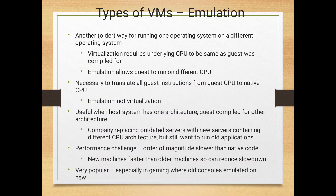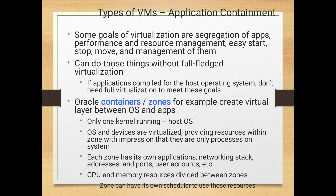Emulation is another way of running one operating system on a different operating system. Emulation allows a guest to run on a different CPU by translating all guest instructions from the guest CPU to the native CPU. Emulation is not virtualization. A common use case is a company replacing outdated servers with new servers containing different CPU architectures but still wanting to run old applications. This has performance challenges, though the new machine is generally faster than the older one.